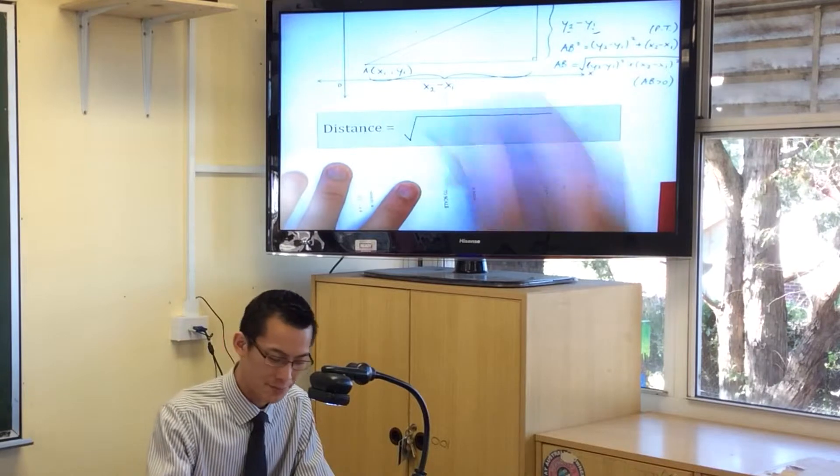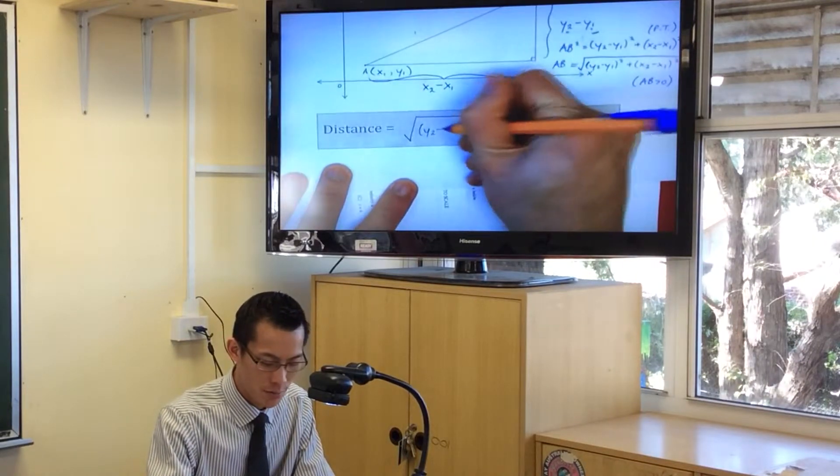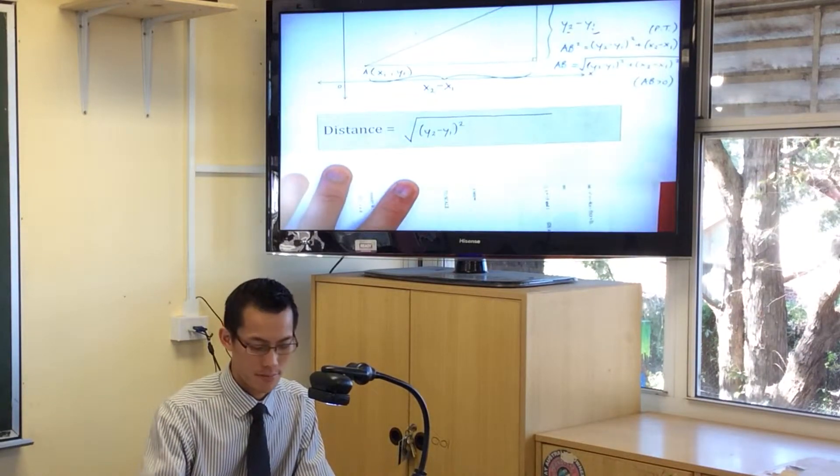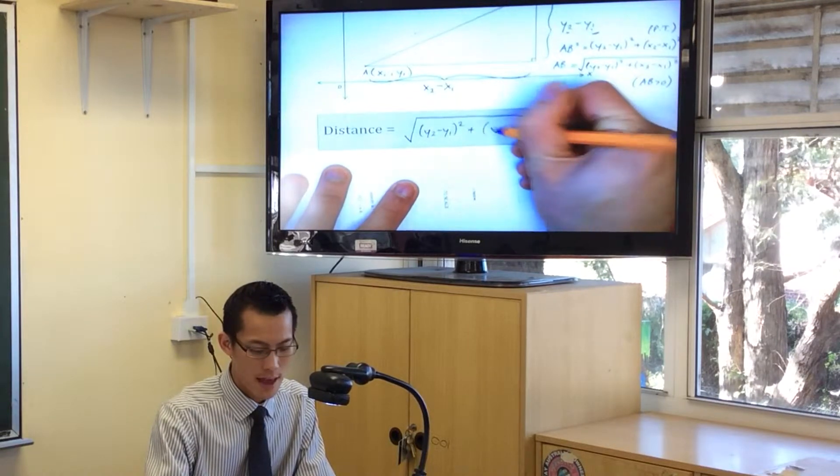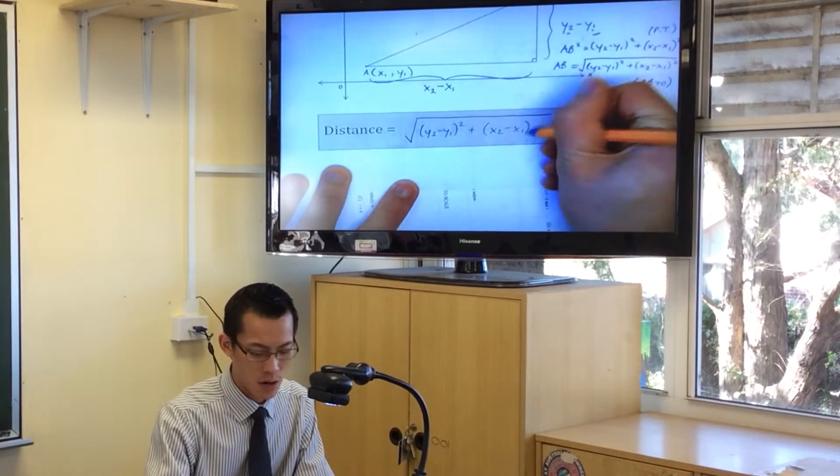It's the square root of y2 minus y1 all squared, plus x2 minus x1 all squared.